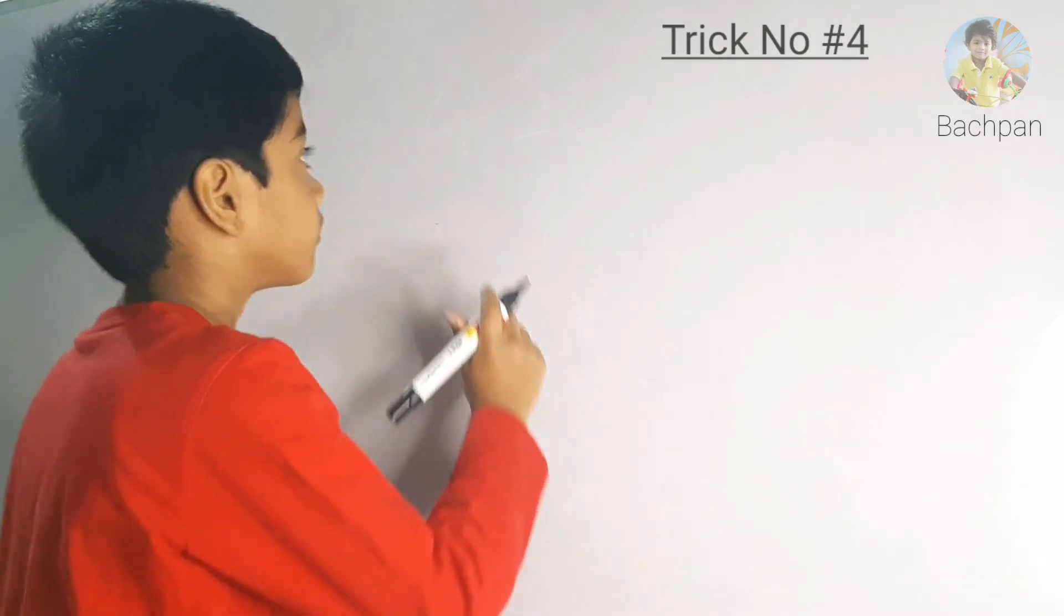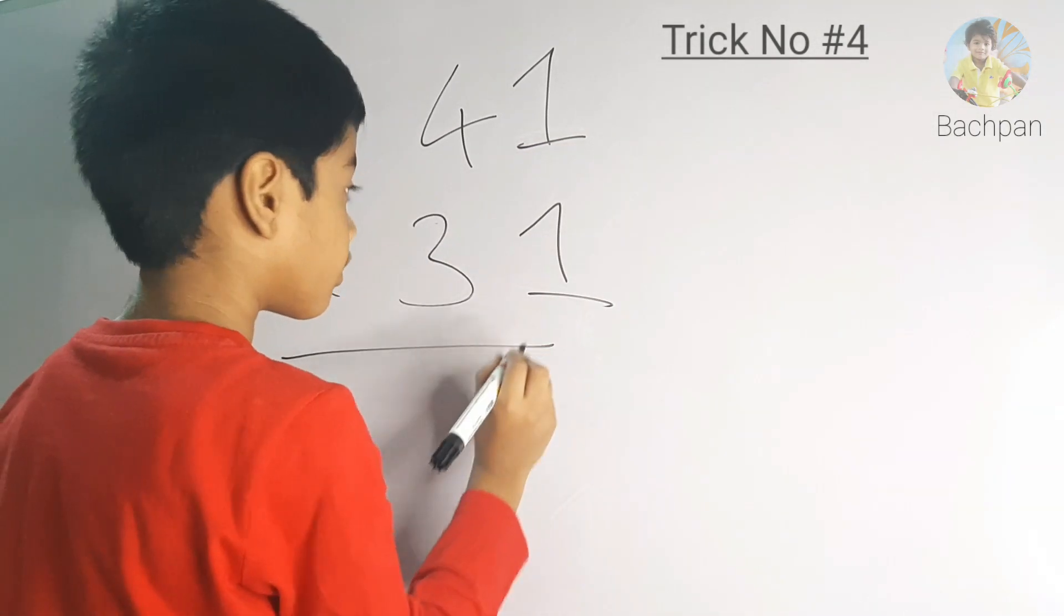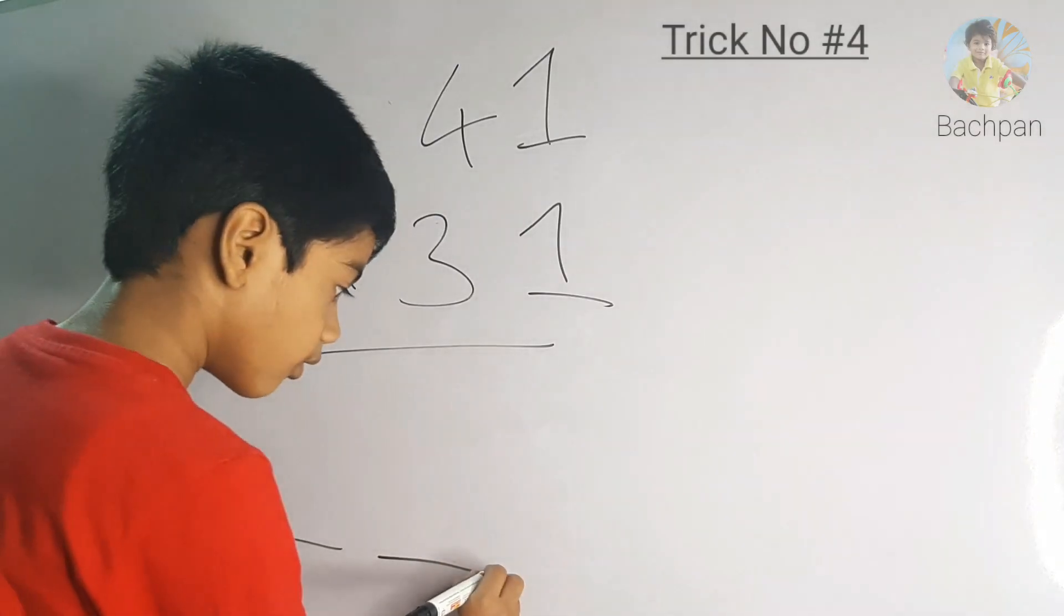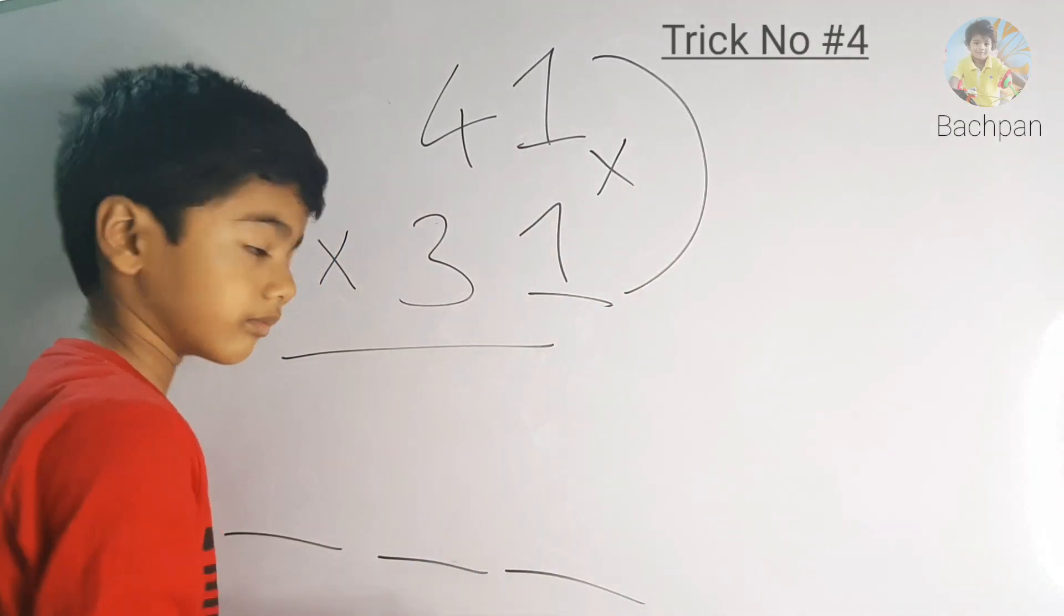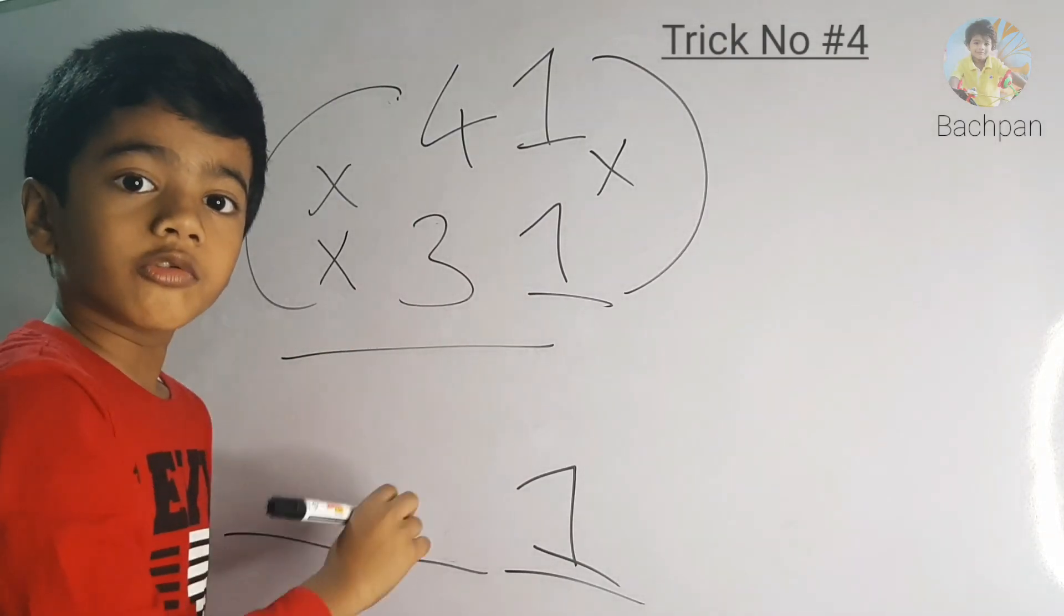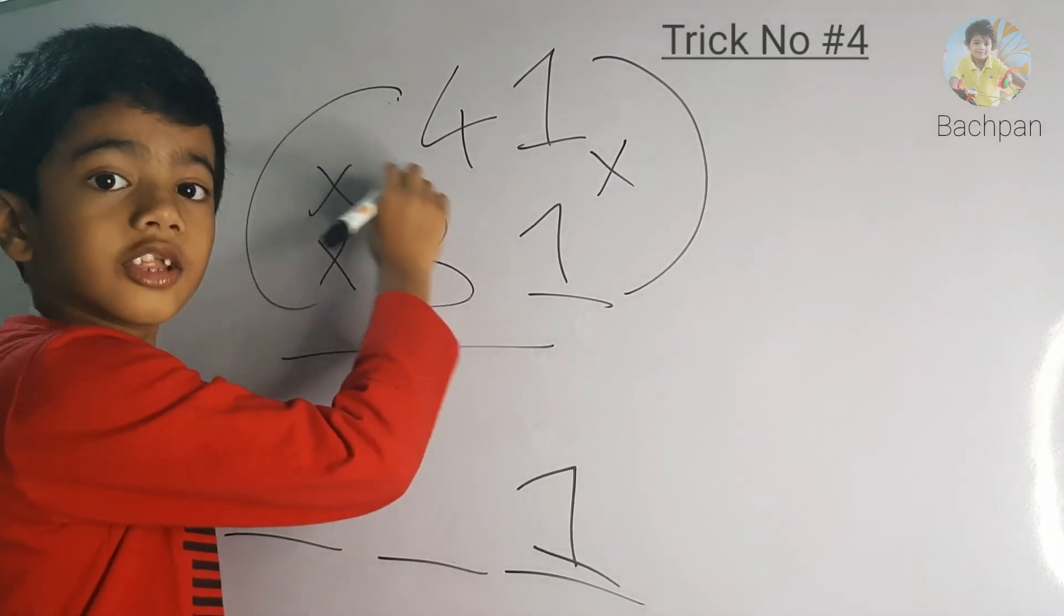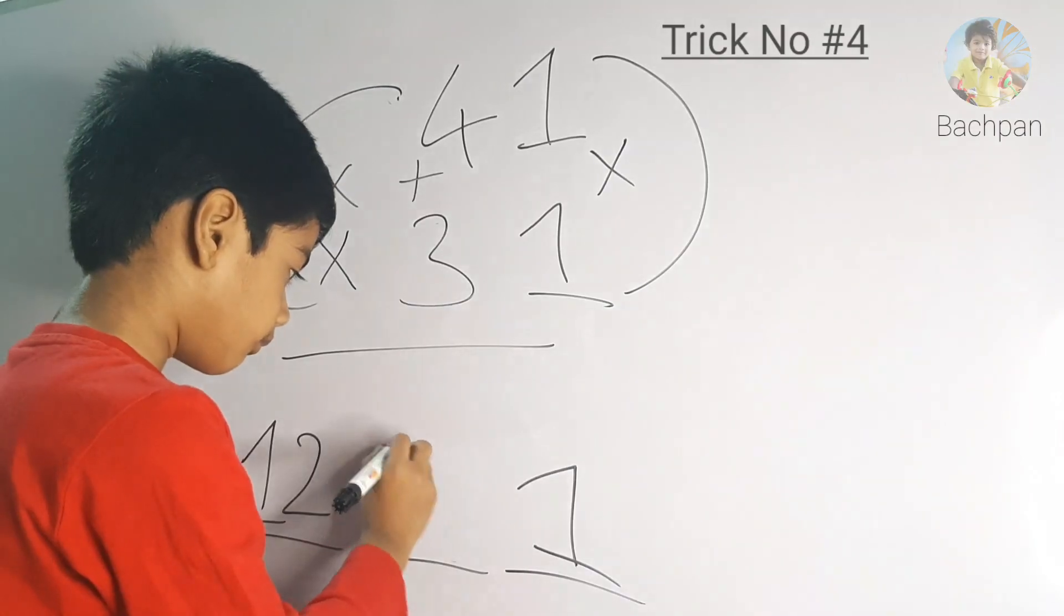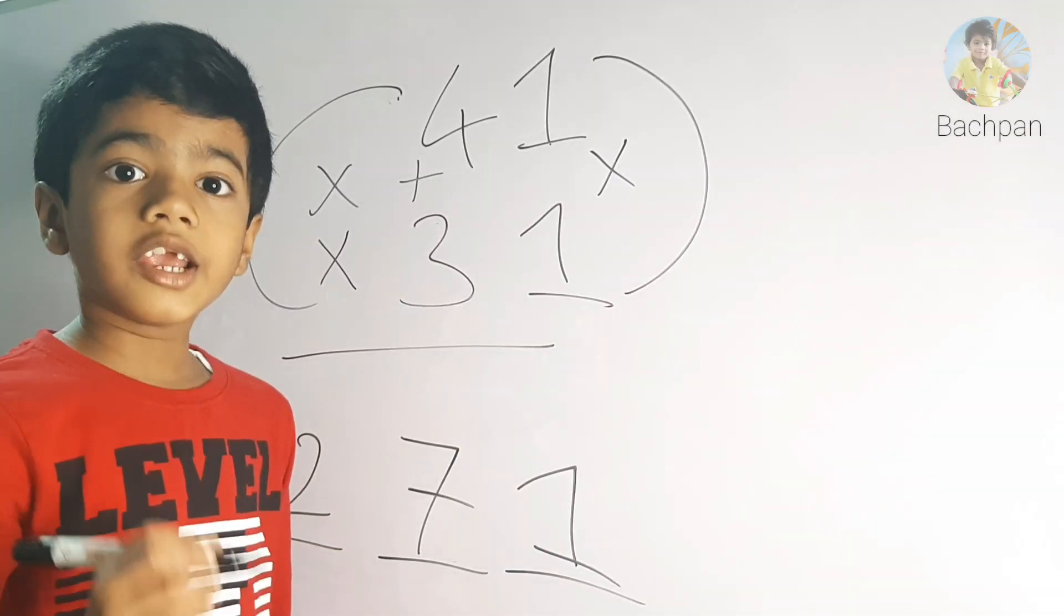Let's take another example. 41 into 31. Draw 3 lines as below. One, two, three. What is 1 times 1? 1. So write here 1. What is 4 into 3? 12. So write here 12. Let's add these two numbers. 4 plus 3 is 7. So write here 7. So the answer is 1271. See, it's very easy.